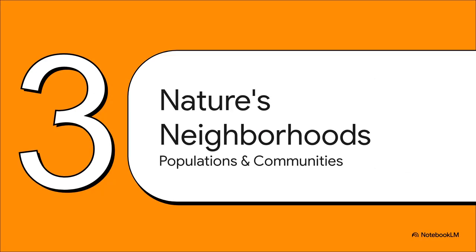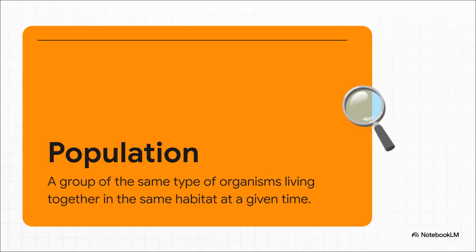So, who lives there? Let's talk about the residents in these natural neighborhoods. You know, when you picture a forest, you don't just see one single elephant, do you? Nope. You see a whole herd. Well, that group of the same species living together, that's what we call a population. So you've got a population of elephants, a population of oak trees, a population of birds, and so on.